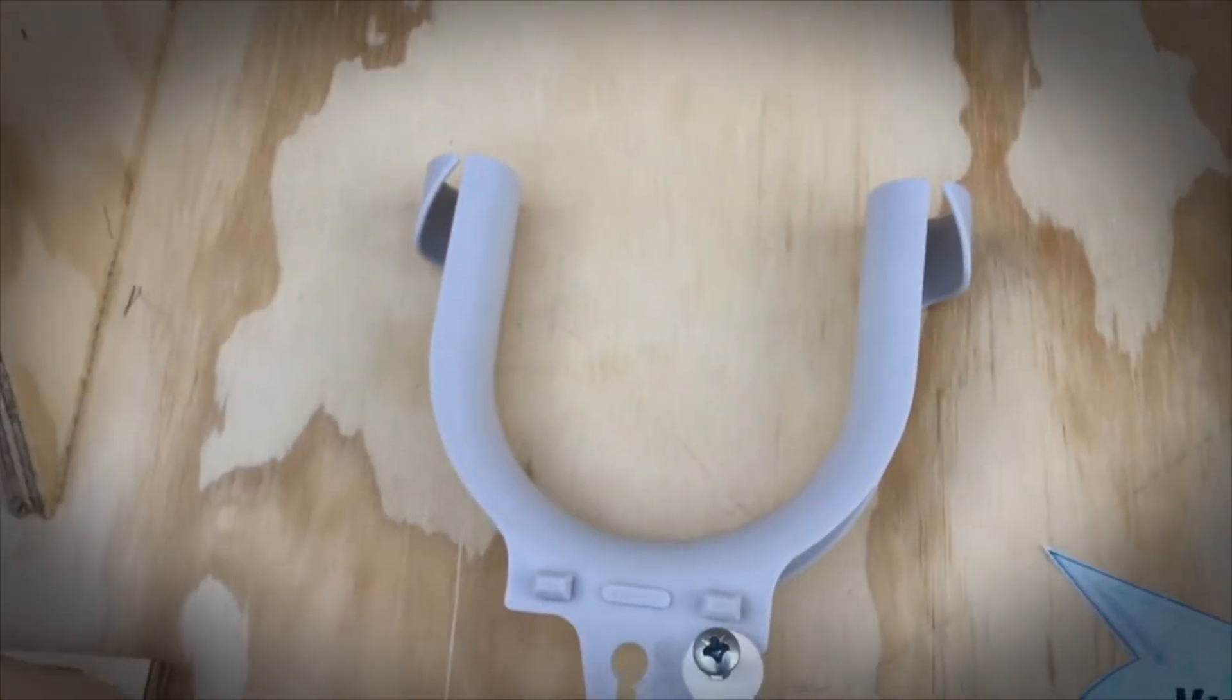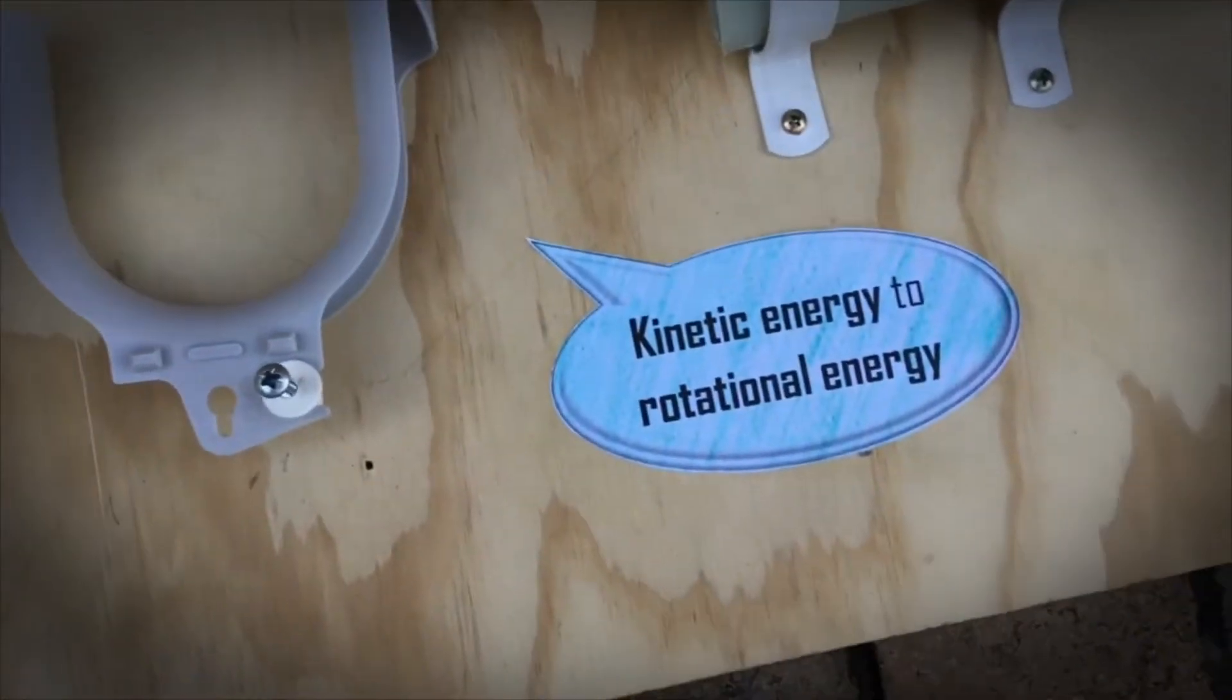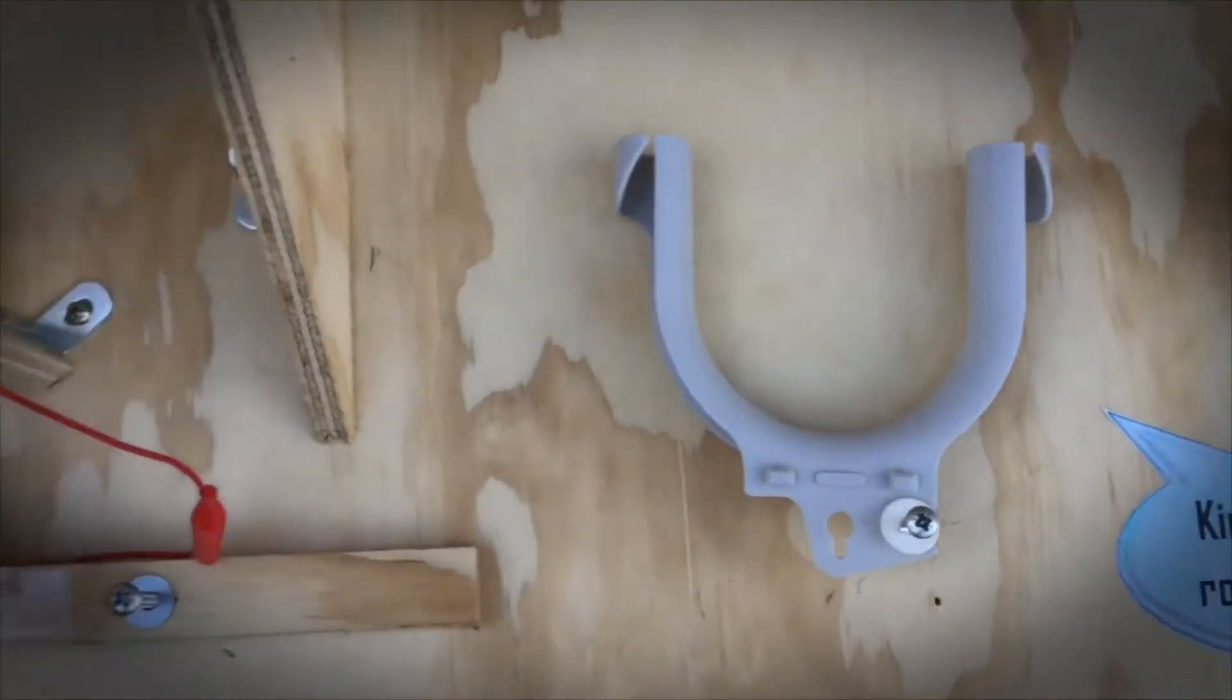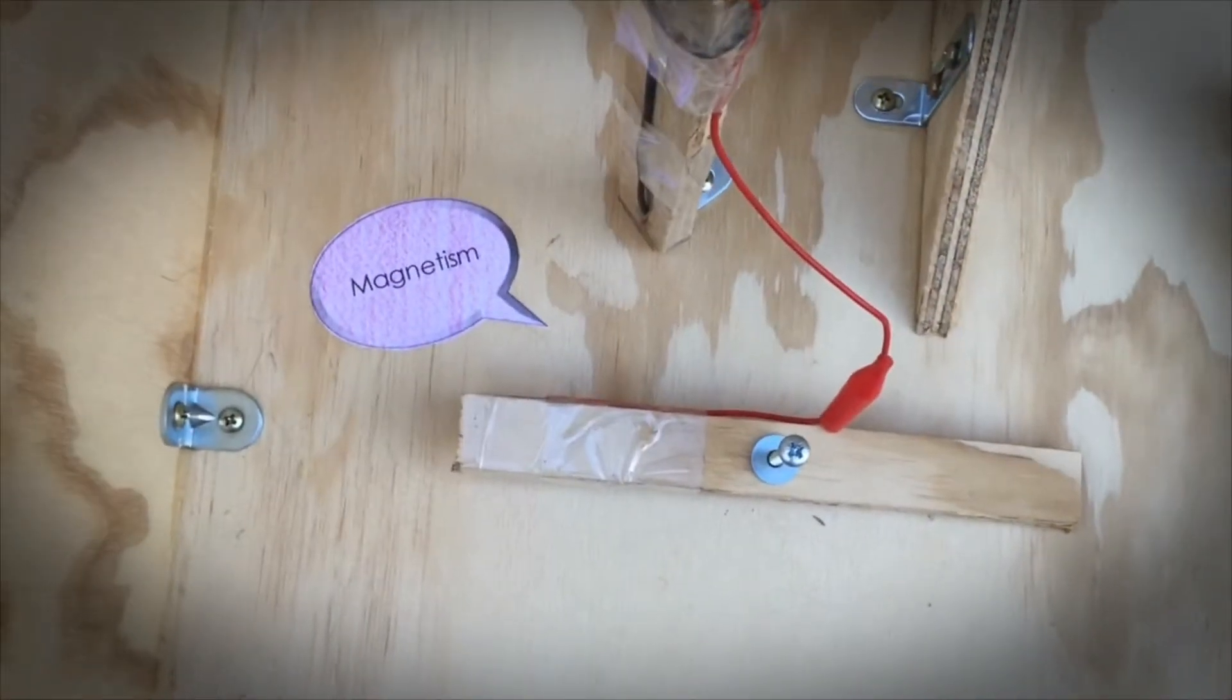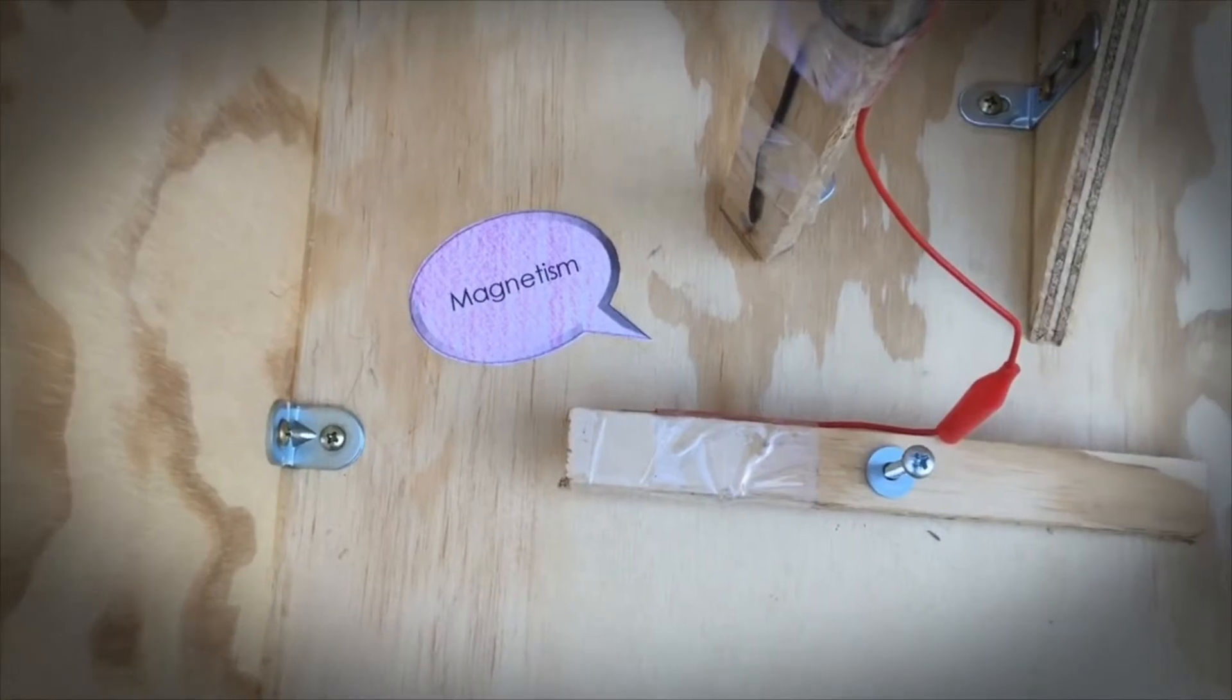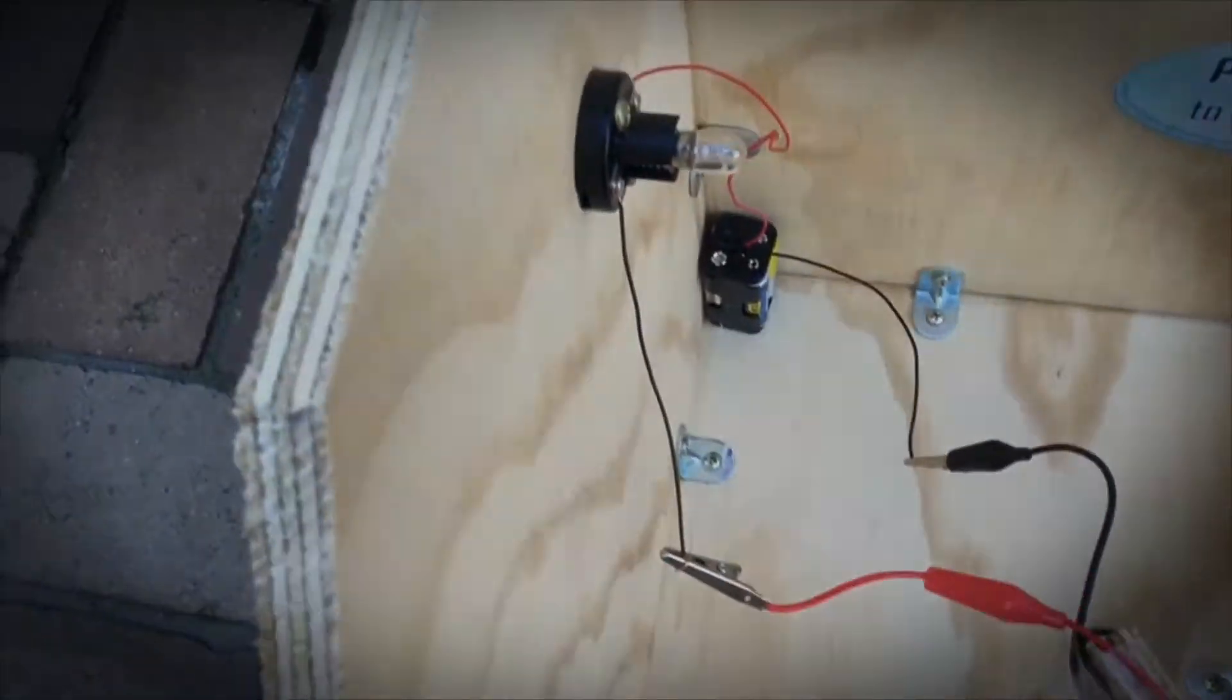It goes and hits this U-shaped pipe. There, its kinetic energy is transformed into rotational energy. That hits the final lever which, under the pull of magnetism, connects the two wires together and completes the circuit.